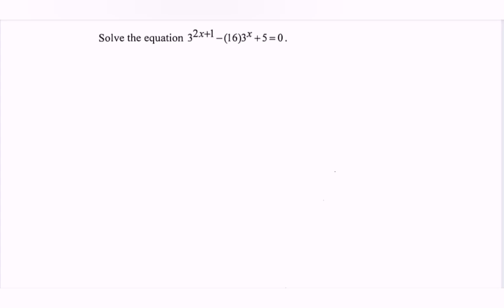First, we expand the equation. We have 3 to the power of 2x multiplied by 3 to the power of 1, minus 16 multiplied by 3 to the power of x, plus 5 equals 0.